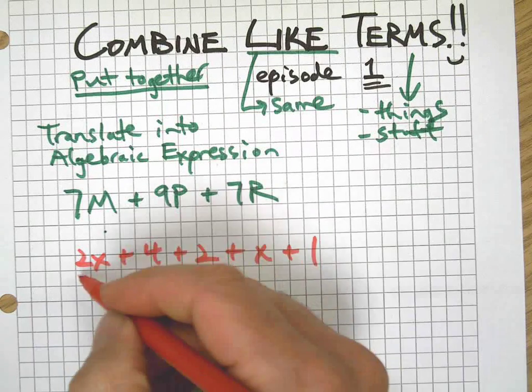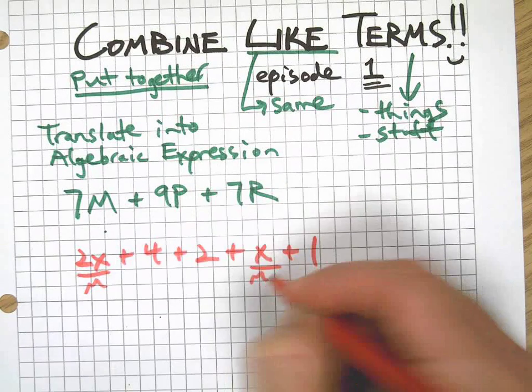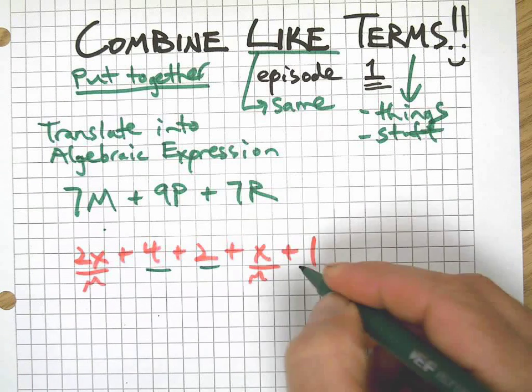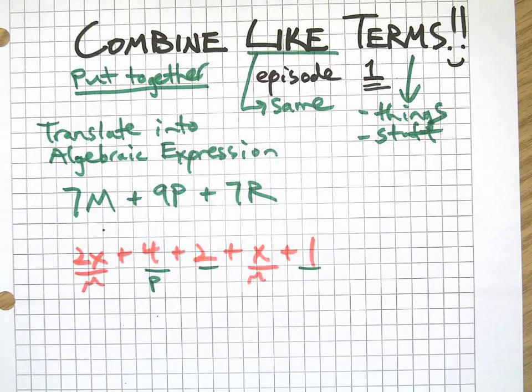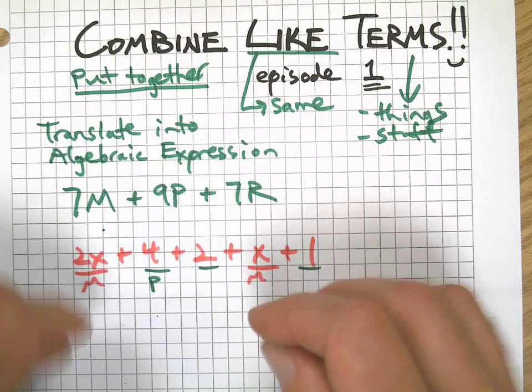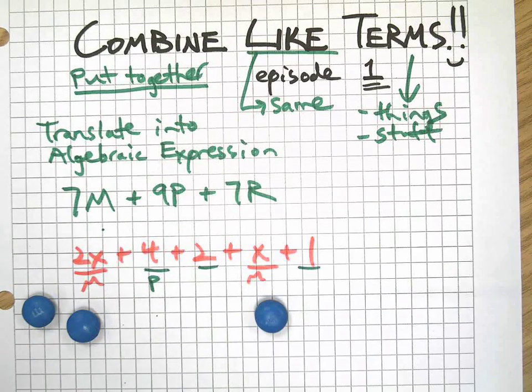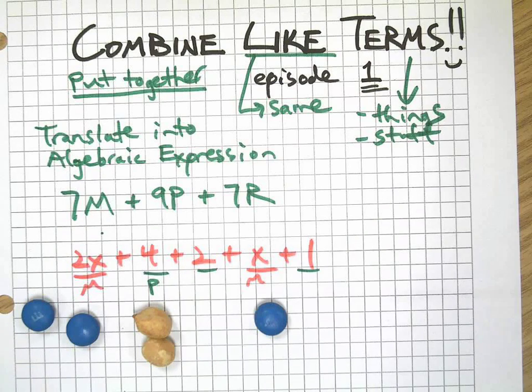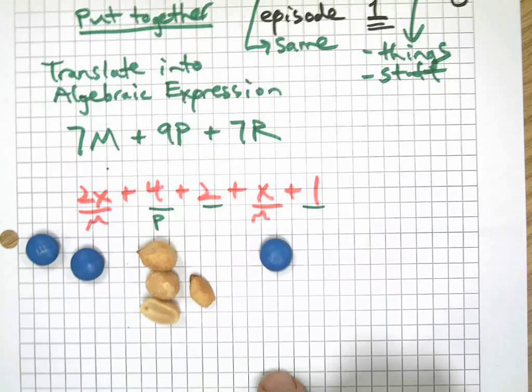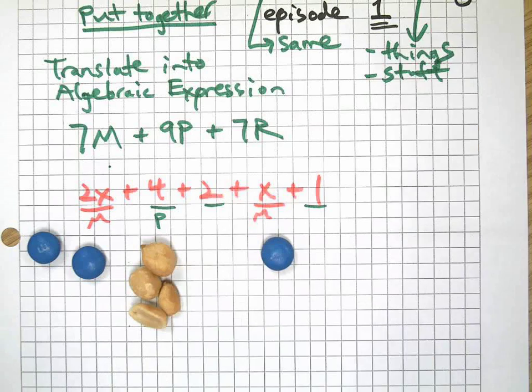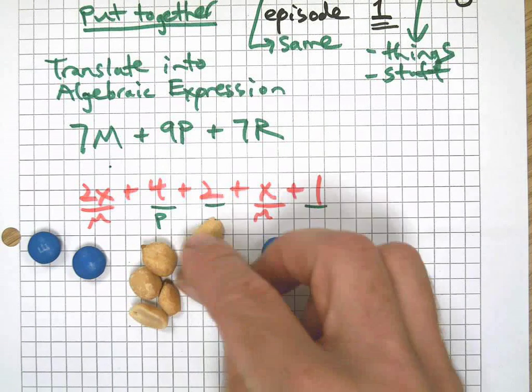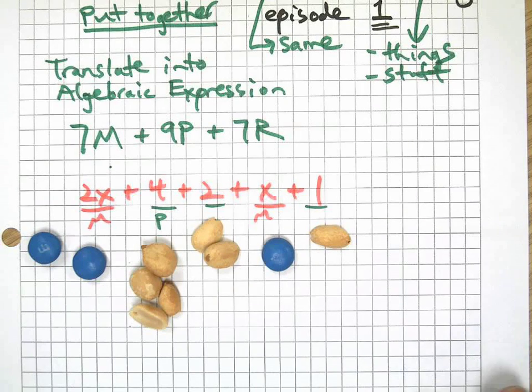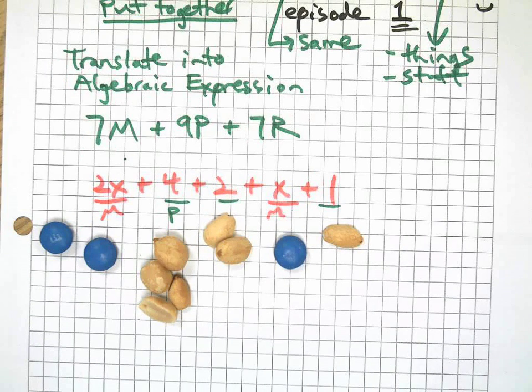In fact, let's pretend like the X's are M&Ms and let's pretend like the numbers are peanuts. Hey, let's do that. There's two X. There's another X. There's four peanuts. And there's a couple more peanuts. And there's another peanut. There's that same expression using trail mix.